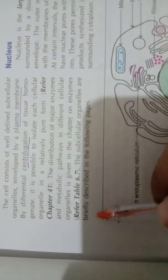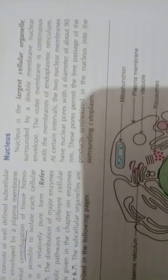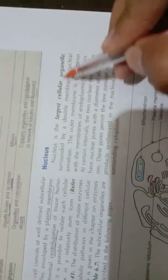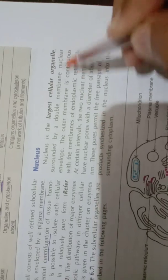The subcellular organelles are briefly described as follows. First is the nucleus, which is the largest cellular organelle, surrounded by a double membrane called the nuclear envelope.